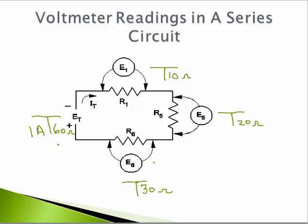Now I have two values in the totals T. 1 amp times 60 ohms will give me 60 volts. And that comes from Ohm's law, E equals I times R equals the voltage.